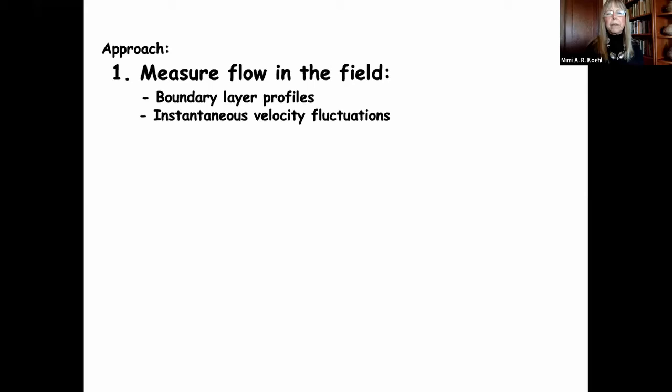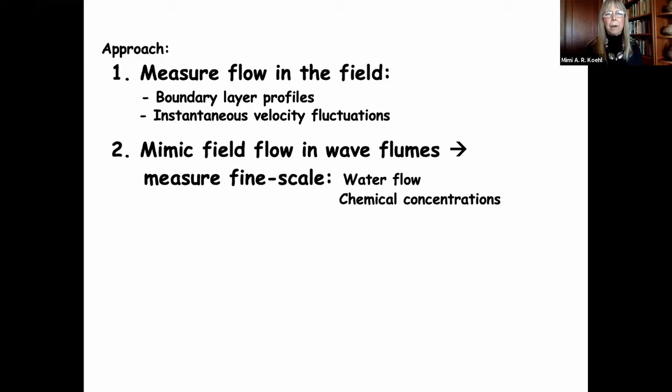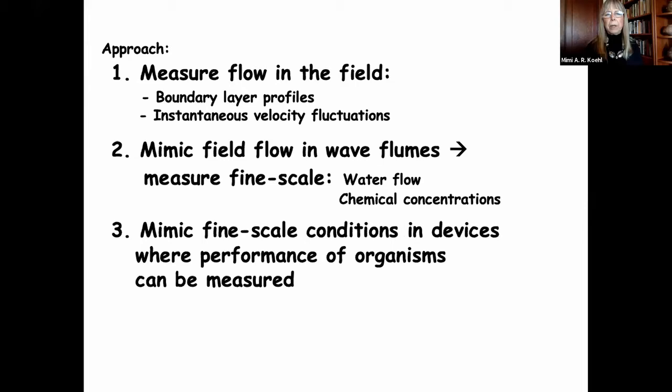The approach we've been using to address this question has a number of steps. First, we measure water flow in the field — we get boundary layer profiles and instantaneous velocity fluctuations of natural ambient flow. Next, we use those data to mimic that flow field in wave flumes in the lab, where we can do much finer-scale measurements of water flow and chemical concentration distributions. Then, once we know those fine-scale measurements, we mimic those very fine-scale conditions in even smaller devices where organism performance can be measured and viewed through the microscope.